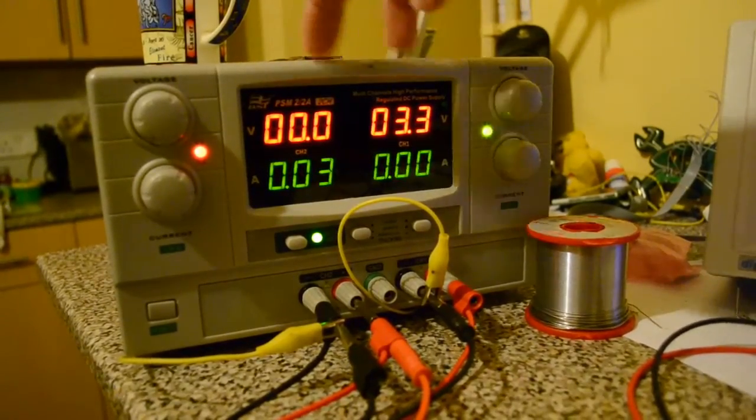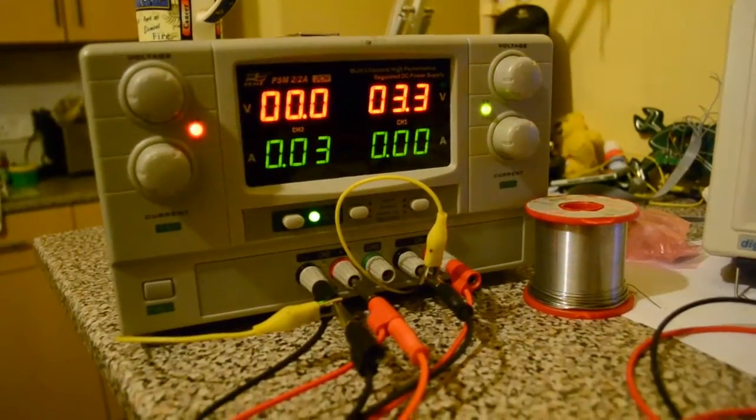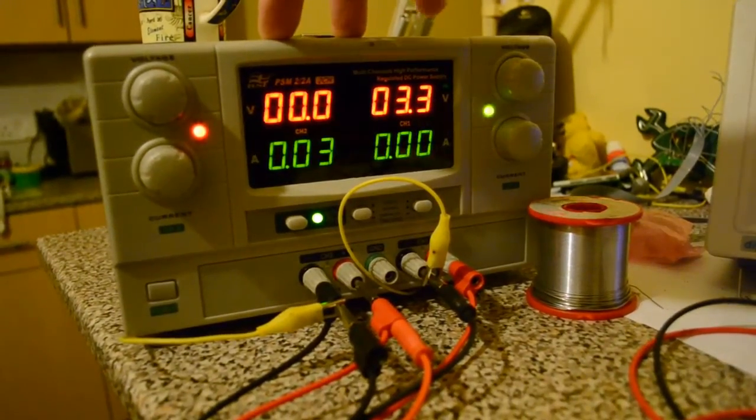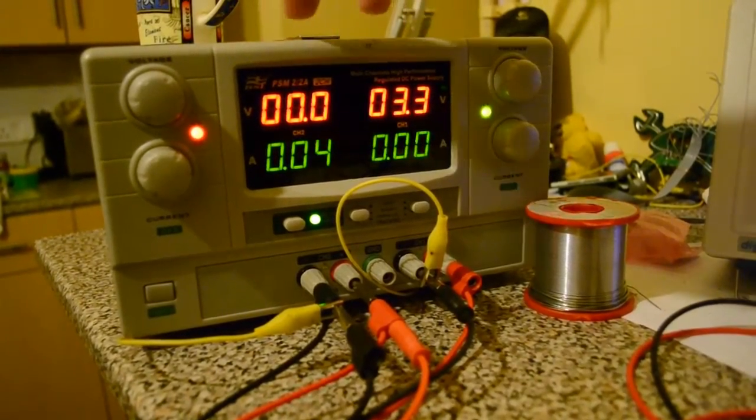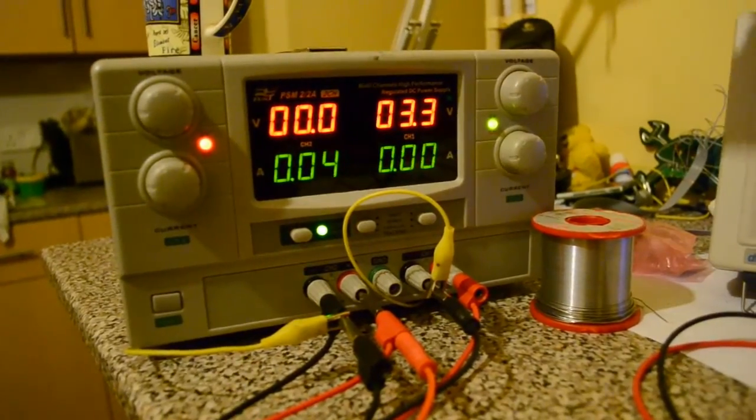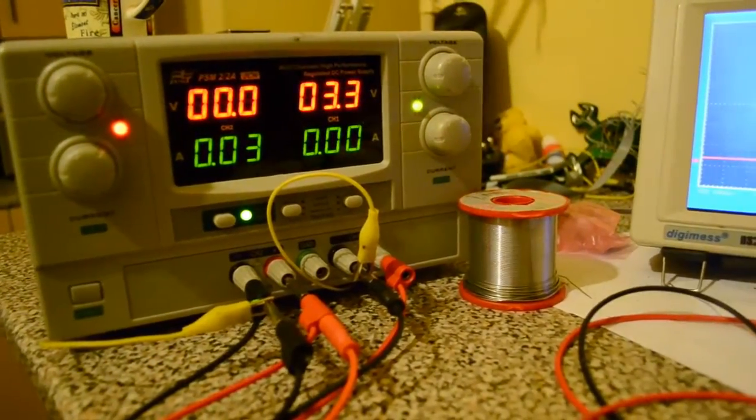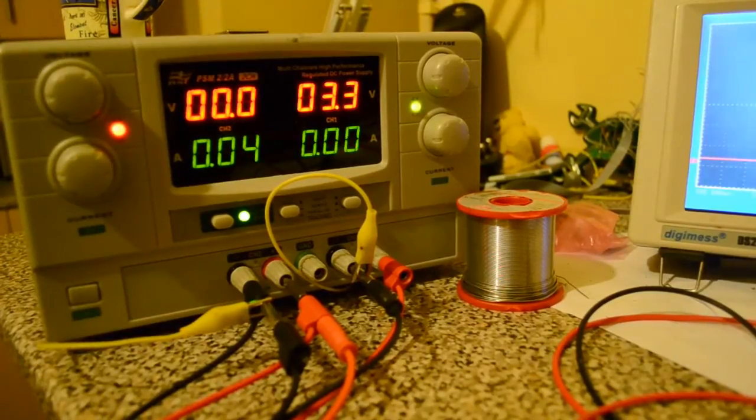Which you can also double up, have them in series or parallel. So you could have 60 volts at two amps or 30 volts at four amps. So what I've got on the right-hand side is driving the current sense amplifier.